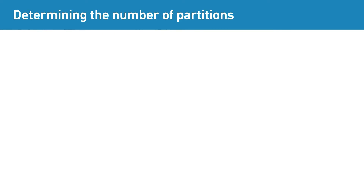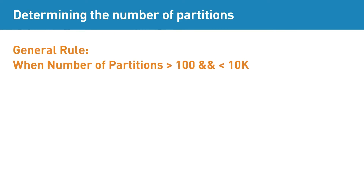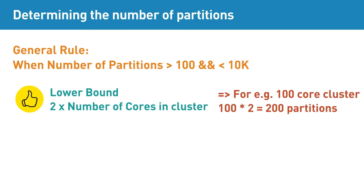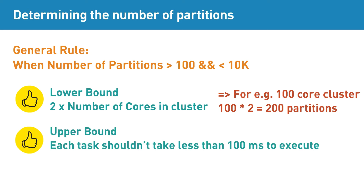The general rule is that when the number of partitions is in the range of 100 to 10,000, the lower bound for Spark partitions is determined by two times the number of cores available to the application. So, if it is a 100-node cluster, the number of partitions should be at least 200 for optimum performance. The upper bound for partitions in Spark should not be exceeded if an individual task takes less than 100 milliseconds to execute.